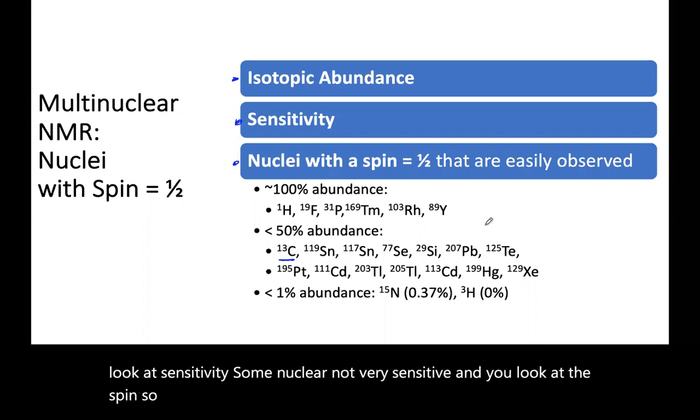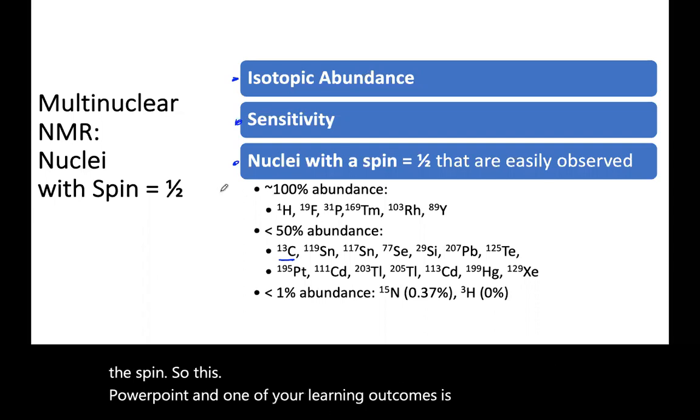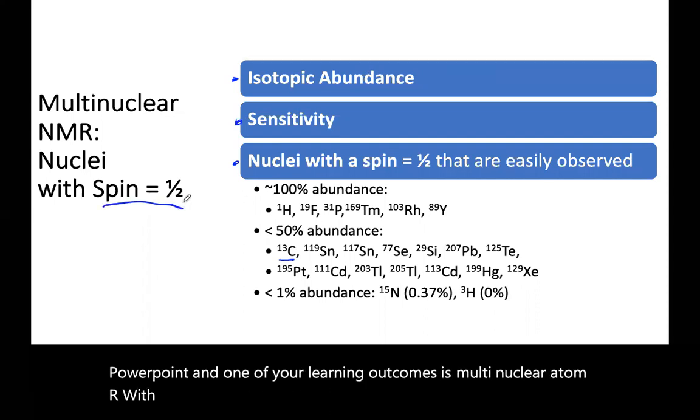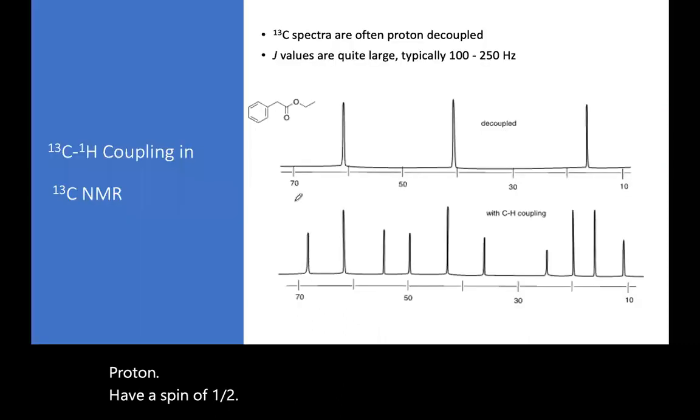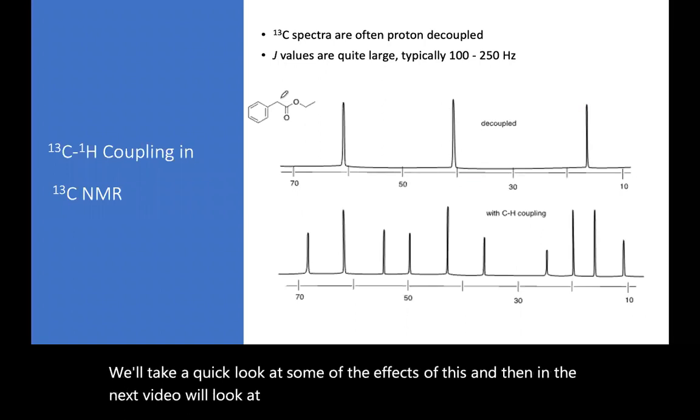And you look at the spin. This PowerPoint and one of your learning outcomes is multinuclear NMR with a spin of a half. So everything we've done so far, carbon-13, proton, have a spin of a half. So we'll take a quick look at some of the effects of this. And then in the next video, we'll look at some where we have spin larger than a half.